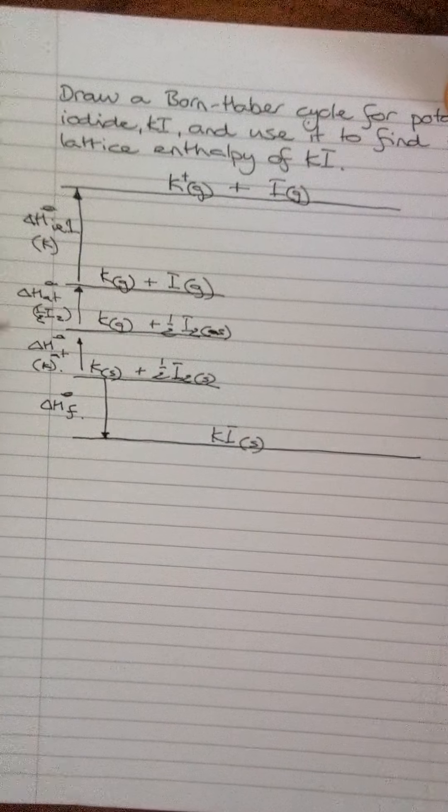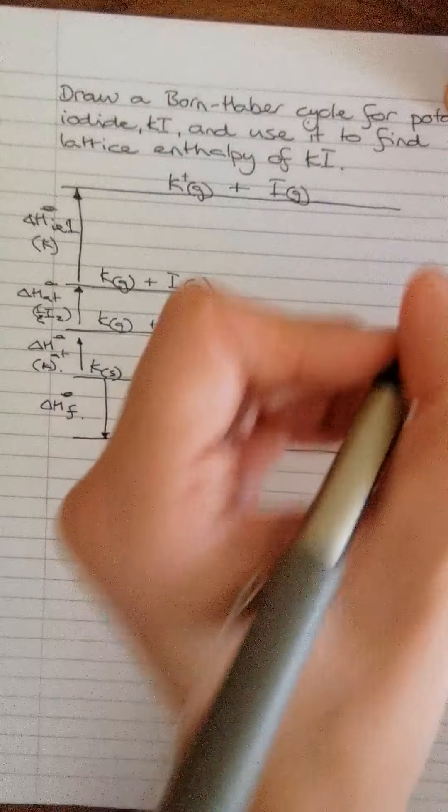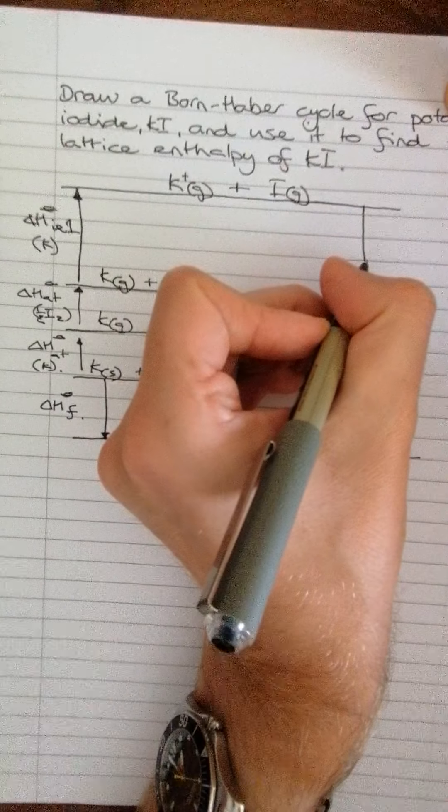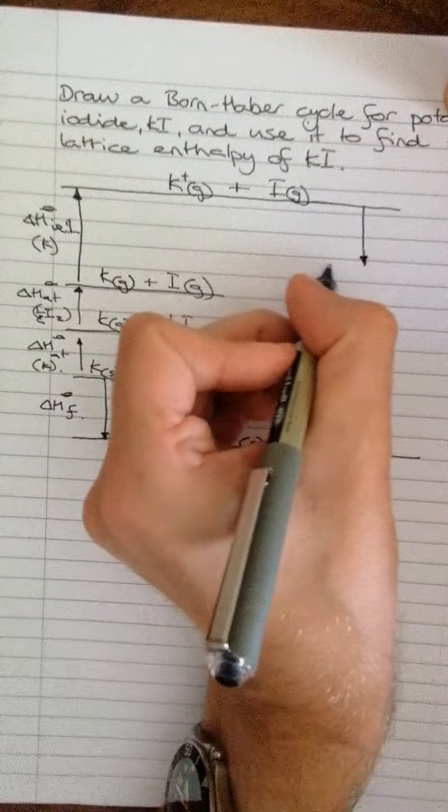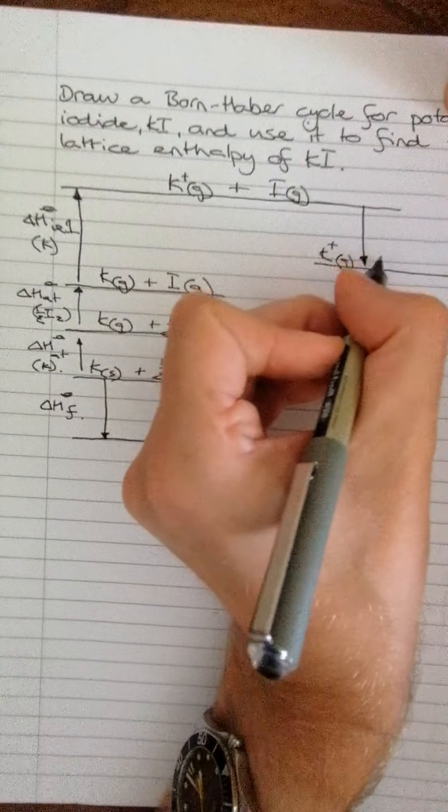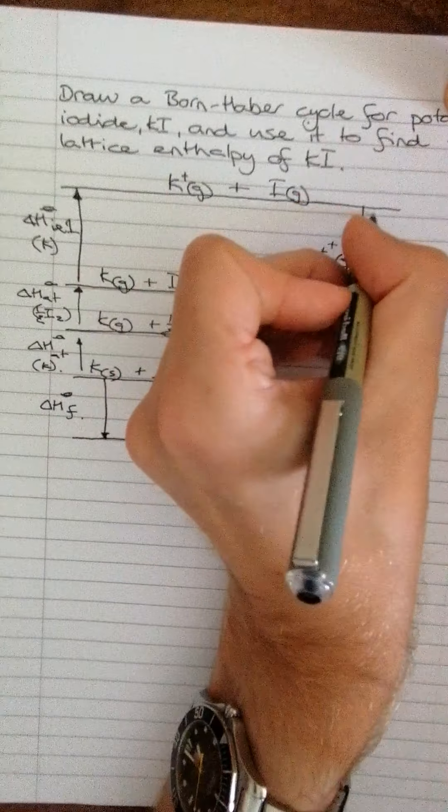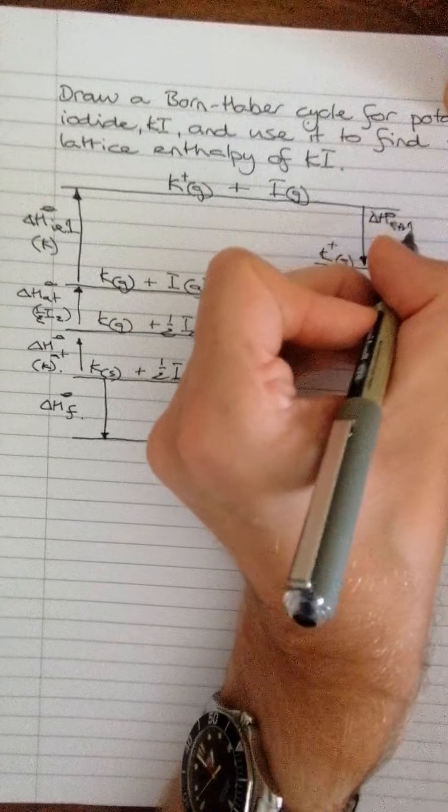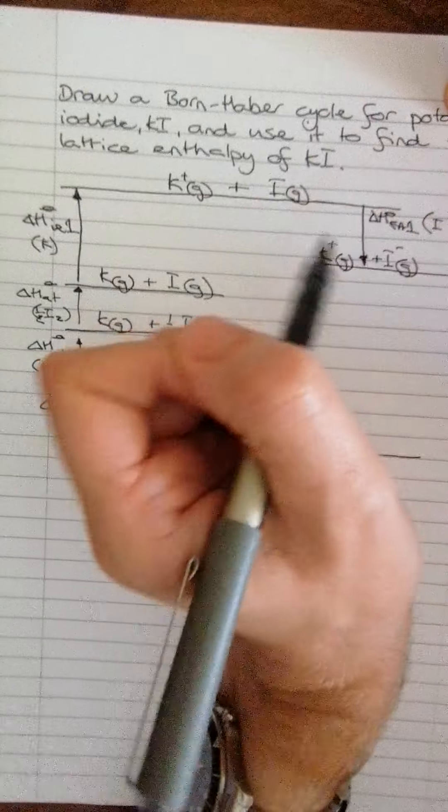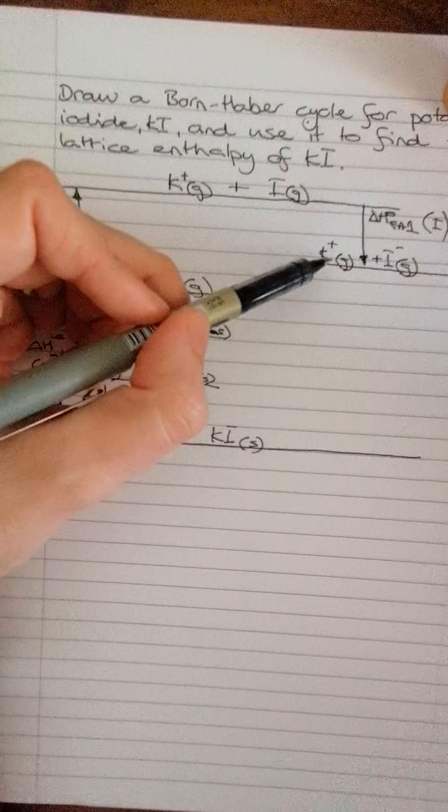So we've done atomization, ionization. Electron affinity is adding electrons. So adding electrons into the iodine in this case. So we're going to have K plus gas plus I minus gas. And that is delta H standard EA1 for our iodine. Okay. So now we've got our ions in their gaseous state.